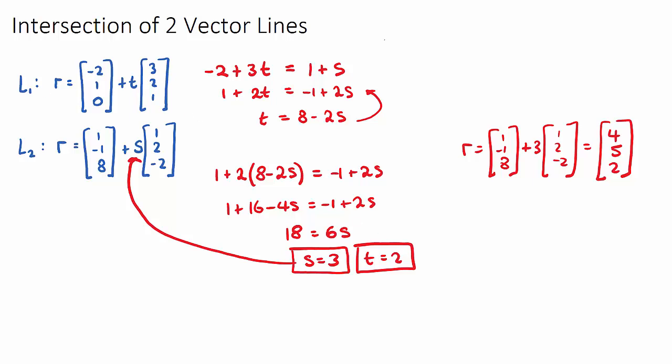So if the question asks for the coordinate where these two vectors intersect, we can just say the coordinate will be 4, 5, 2. This is the coordinate on our plane where these two vectors will intersect.